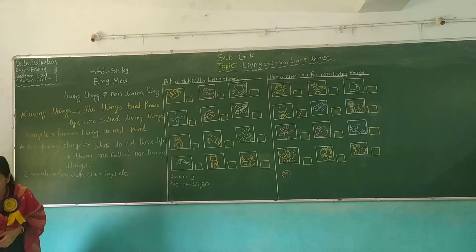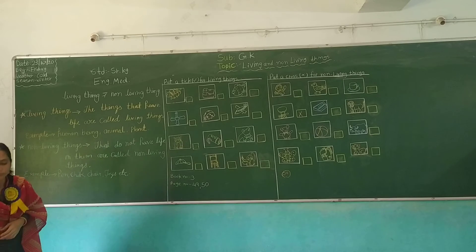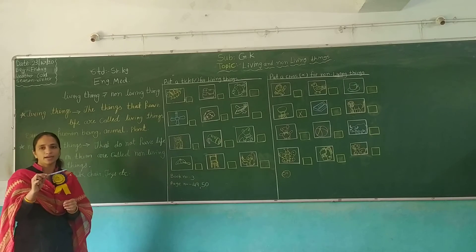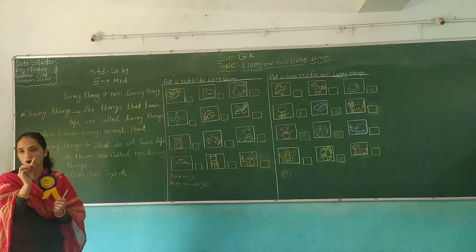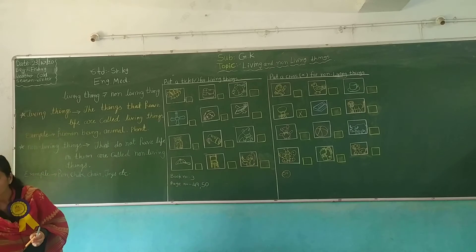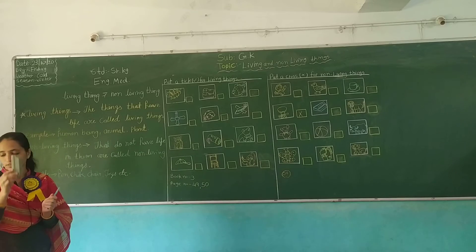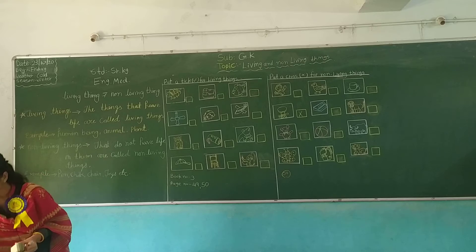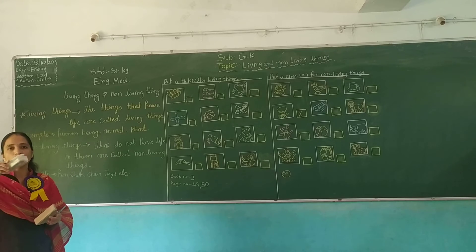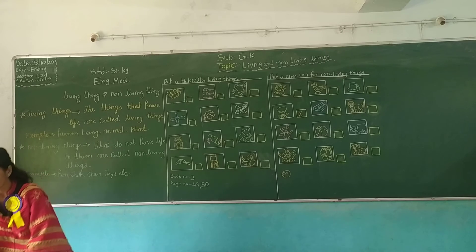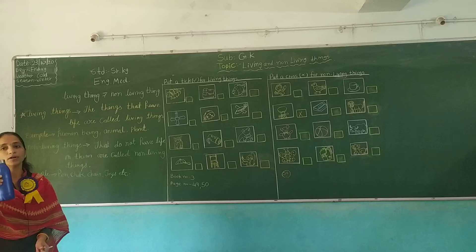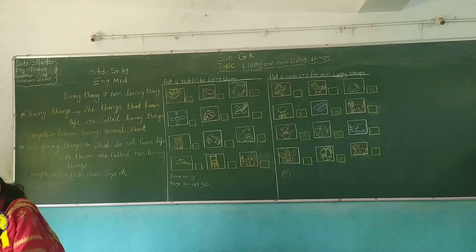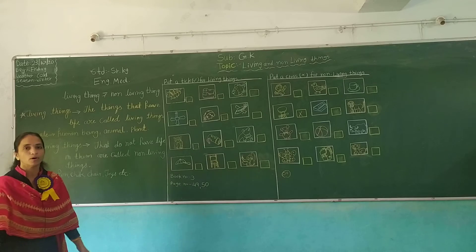For example: pan, duster, chalk, box, water bottle, fan, chair, table, and blackboard are all non-living things.